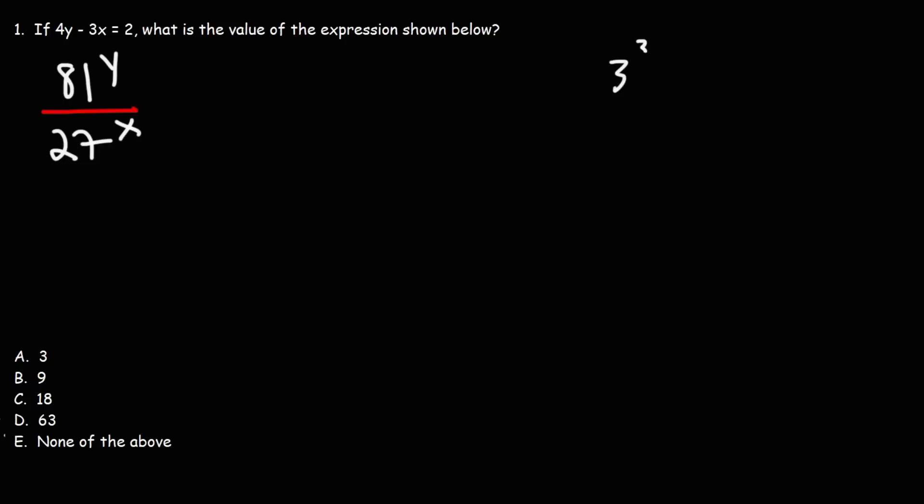27 is 3 to the third power. You need to multiply three threes to get to 27. 81 is 3 to the fourth power. 3 times 3 times 3 times 3, 4 times is 81. So we're going to replace 81 with 3 to the fourth power and 27 with 3 to the third power.